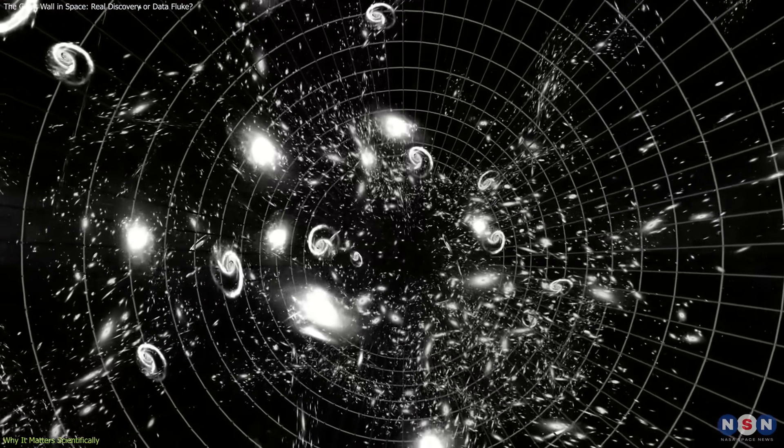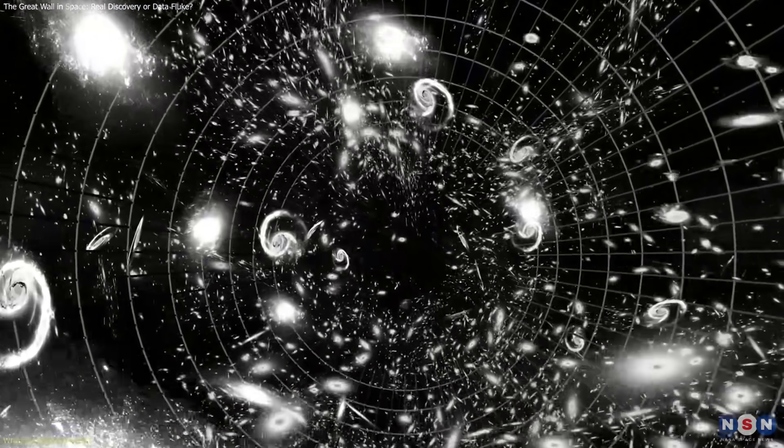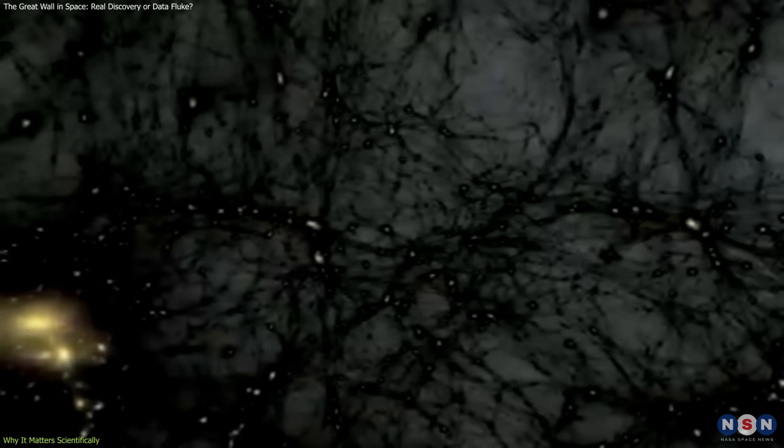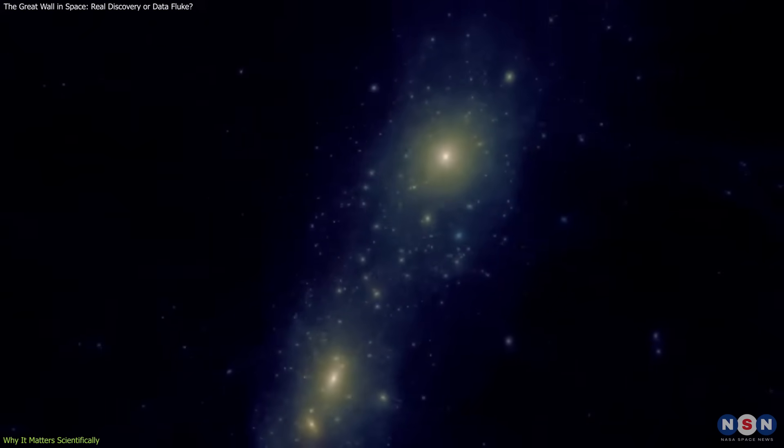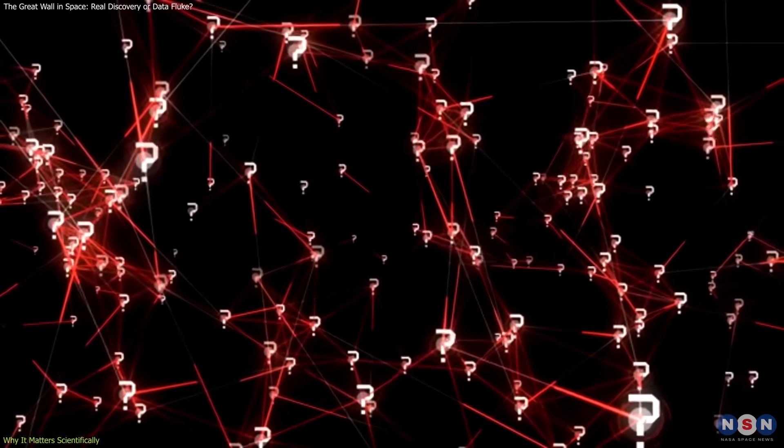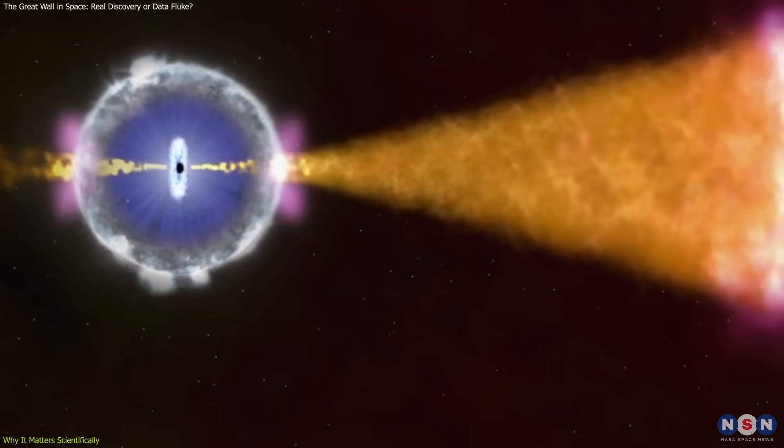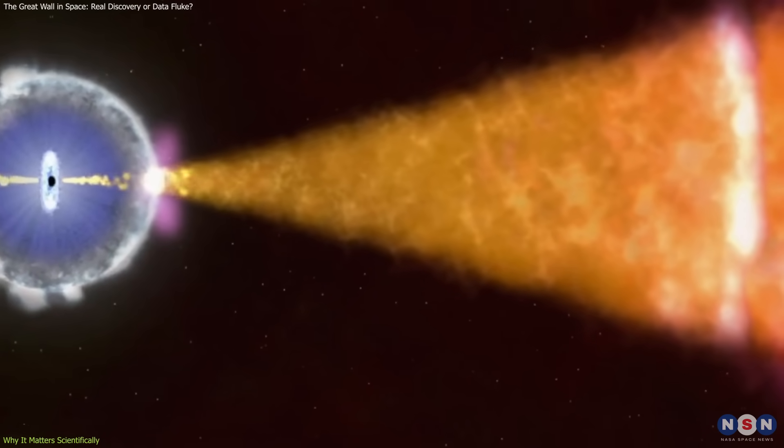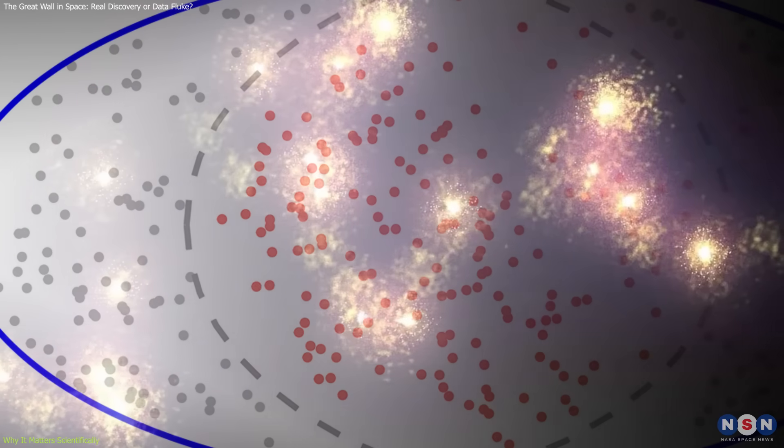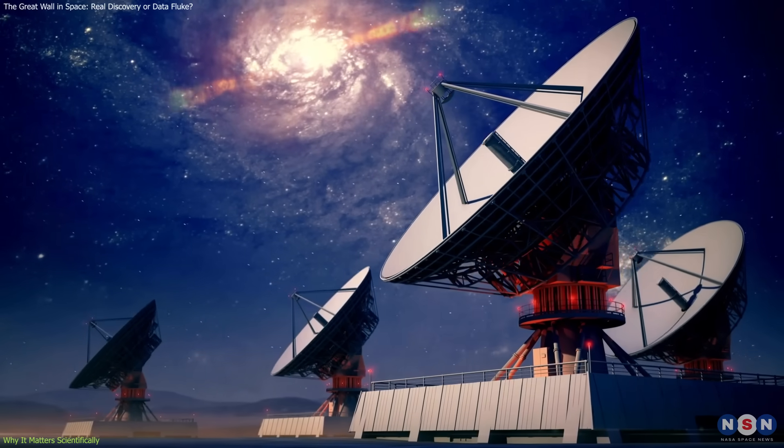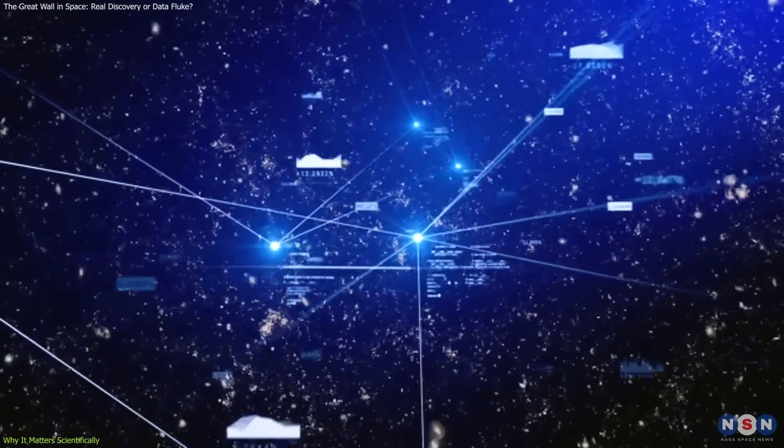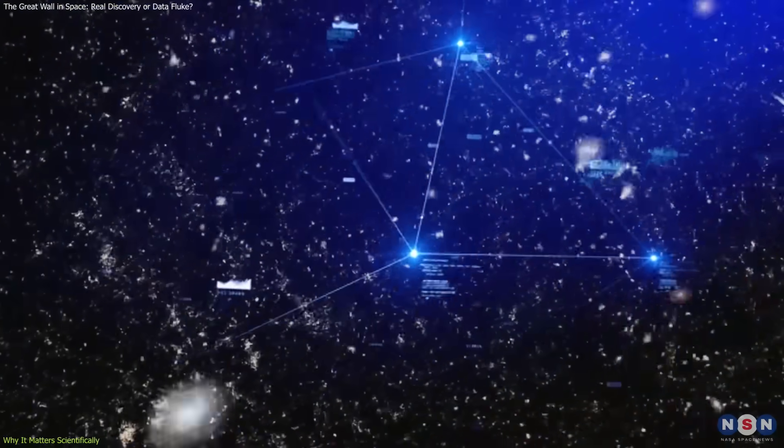Others argue that its scale pushes the limits of plausibility, implying that dark matter distribution or cosmic variance may behave differently than expected on extreme scales. There's also the question of measurement methods. Because GRBs are rare and observed unevenly across the sky, some believe that the clustering could be a sampling artifact, a result of where telescopes have looked, not what's actually there. That concern is valid, and it underscores the need for more uniform data.